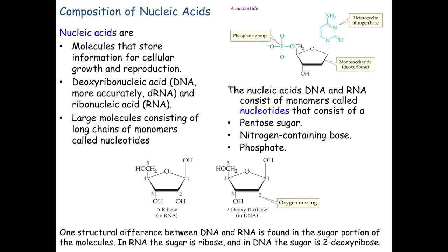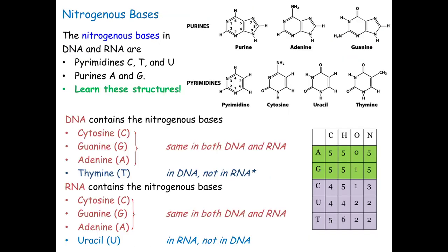In RNA, the sugar is plain ribose with five carbons. In deoxyribose, the two prime hydroxyl is missing — in its place is just a hydrogen. We have five bases: two purines and three pyrimidines. You can tell them apart by counting the number of oxygens. Purines: adenine has no oxygen, guanine has one oxygen. Pyrimidines are single-ring: one oxygen is cytosine, a pair of oxygens is either uracil or thymine — thymine possessing a methyl group, uracil not. A pairs with U or T, and G pairs with C.